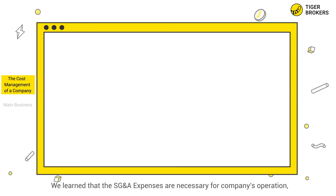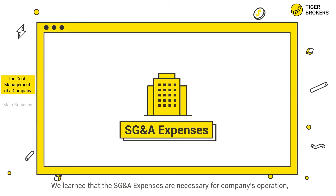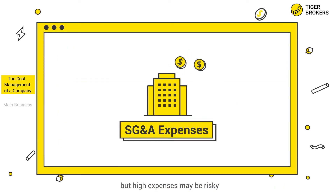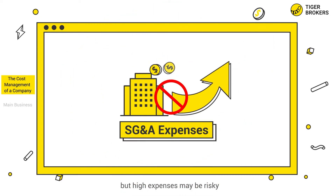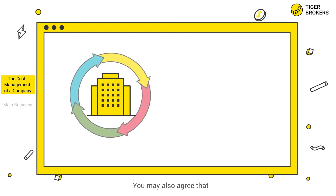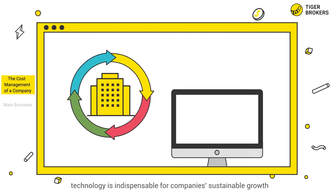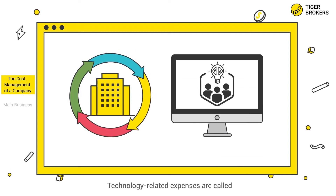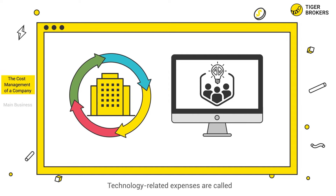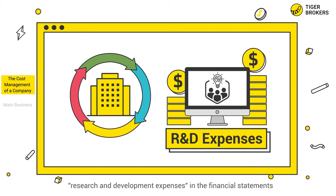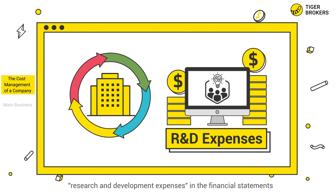So you need to be careful about companies stuck with high SG&A expenses. We learned that SG&A expenses are necessary for companies' operation, but high expenses may be risky. In addition, companies still have other expenses. Technology is indispensable for companies' sustainable growth, and technology-related expenses are called research and development expenses in the financial statements.